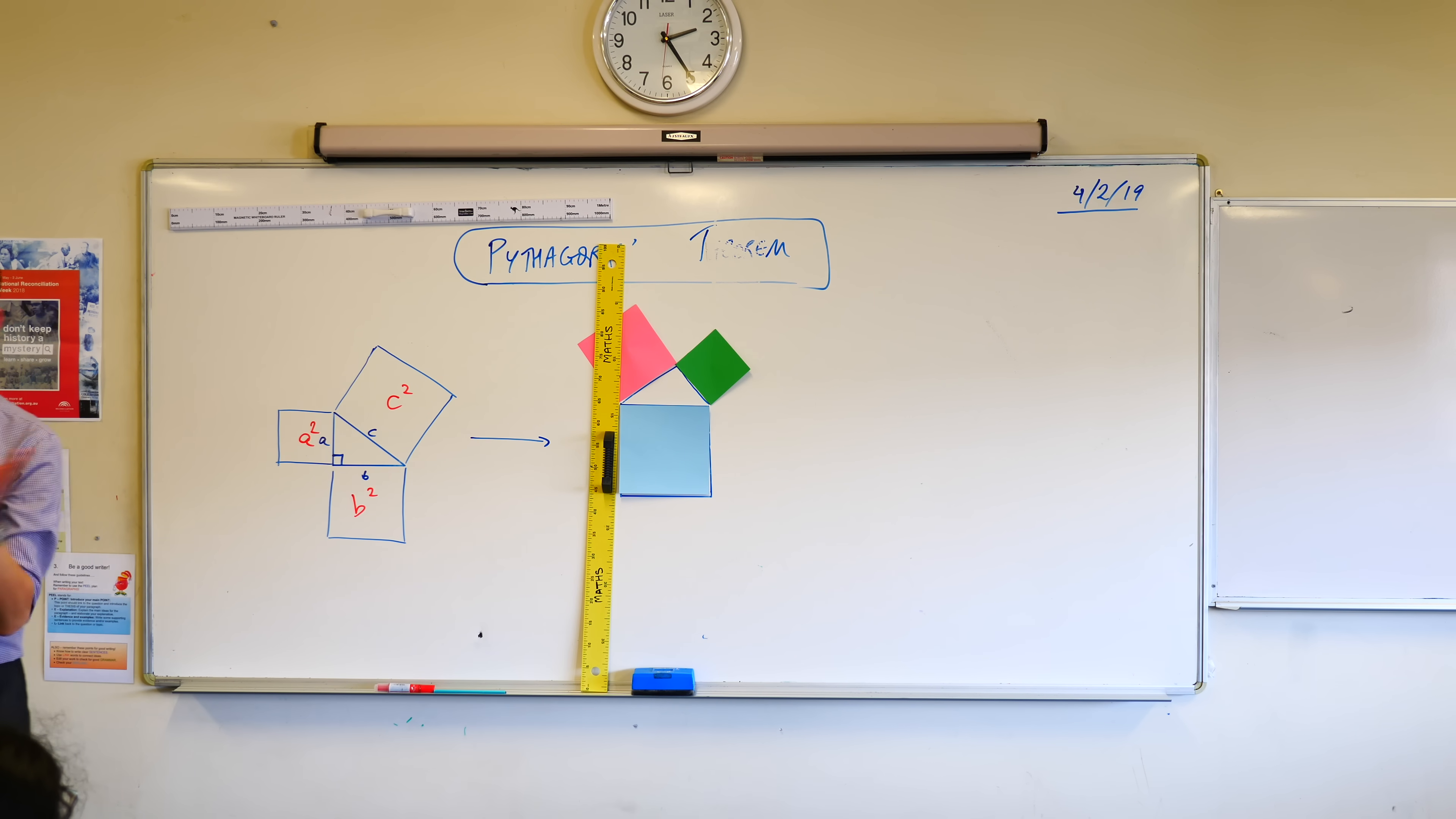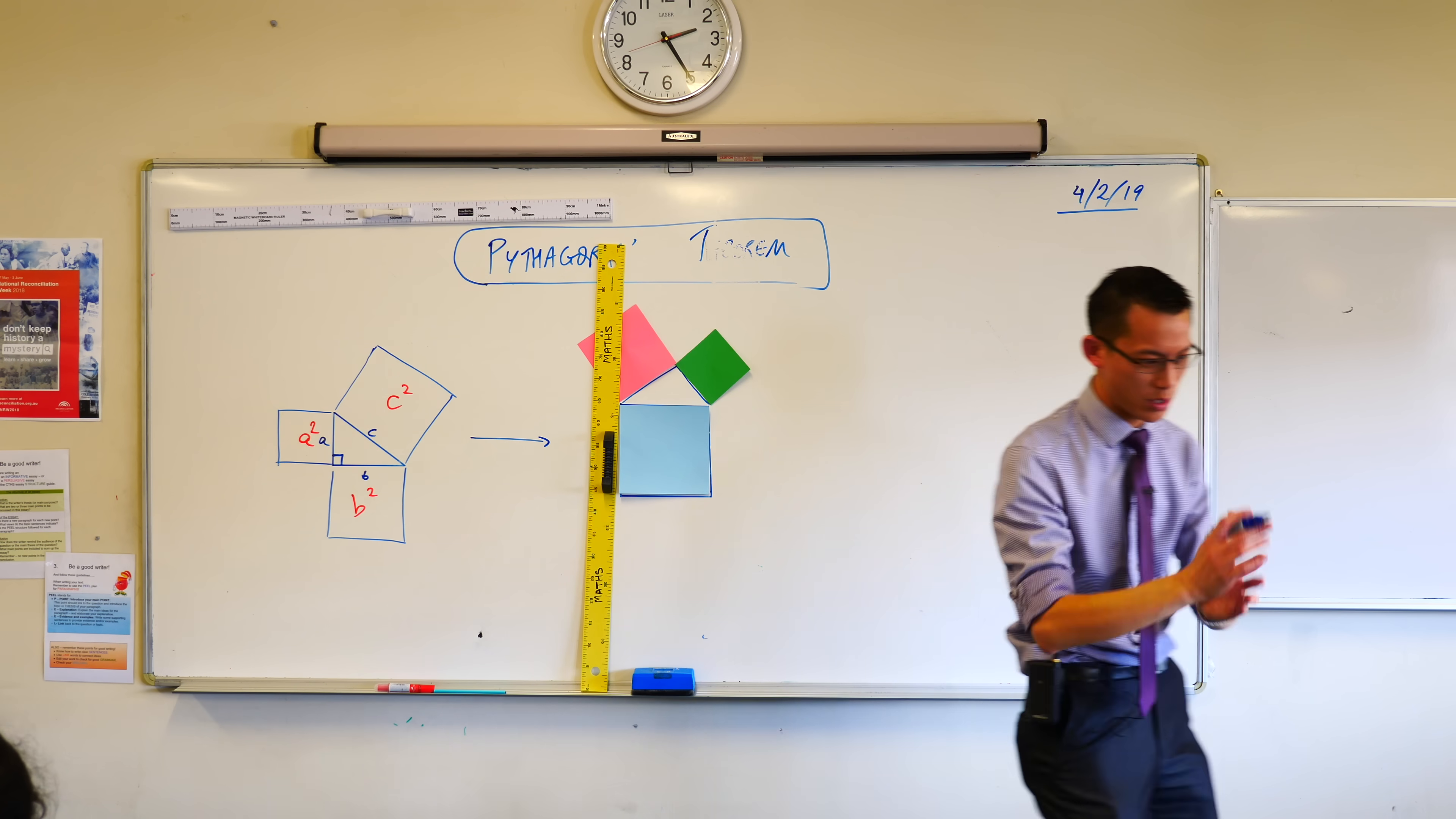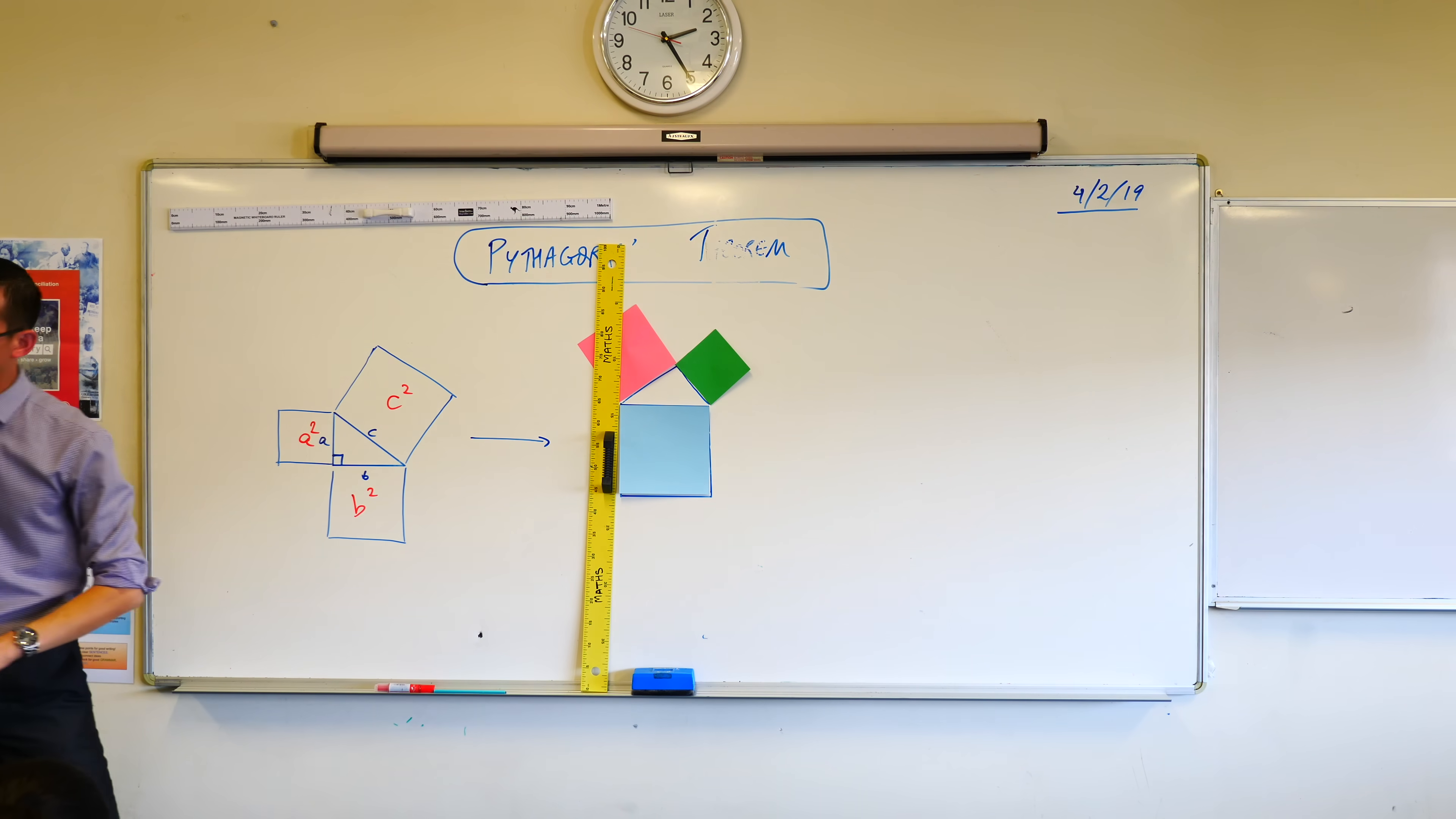So I want you to notice, that ruler is going straight up, it's a vertical line, I'm about to draw a vertical line, and I've lined it up with this square down the bottom, your big square. Are you okay with that? Can you put your ruler in exactly the same spot as mine? So it's lined up with C squared and it's going straight up. Pen or pencil in hand.